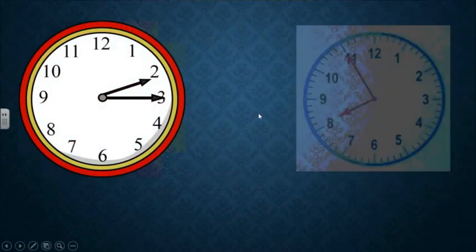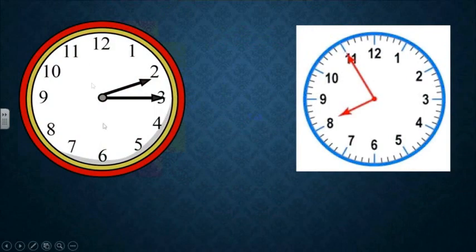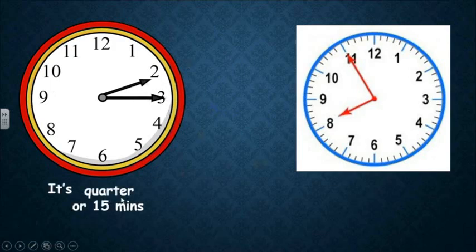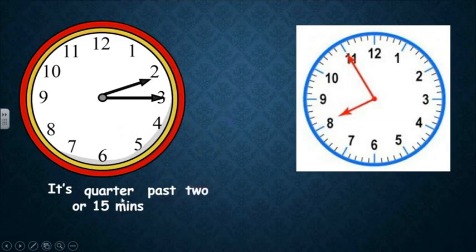Another example. Who can tell me the time in this clock? We look at the long hand, which is for minutes. The long hand is on three. The minutes on three is called quarter or fifteen. The long hand is in the past part. The short hand is on two. So the time here is it's quarter past two.